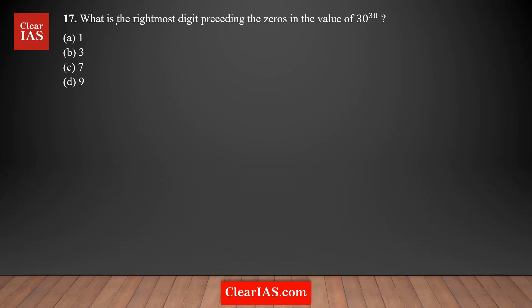Question number 17: what is the rightmost digit preceding the zeros in the value of 30 to the power 30? This number 30^30 is going to end with a lot of zeros. We need to find what is the rightmost digit that comes before those zeros. This question is purely an application of unit digit and cyclicity concepts, so if you remember those from the sessions, this question would be very easy to solve.